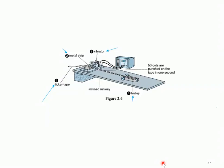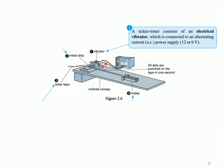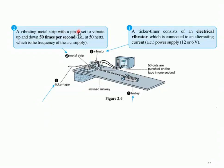So what are the components that you need to know? First is the vibrator. The vibrator — the part where it will vibrate up and down — it consists of an electrical vibrator which is connected to an alternating current power supply, 12 or 6V. I've tried connecting the Ticker Timer to the direct current of the power supply and, as expected, the vibrator doesn't move at all, because we need an alternating current to cause the Ticker Timer to move up and down. The second thing we need to know is actually the metal strip. The vibrating metal strip with the pin is set to vibrate up and down 50 times per second, causing it to move up and down also.